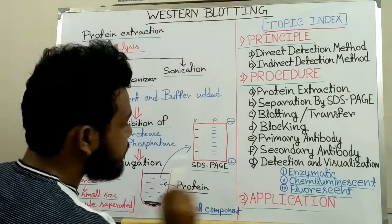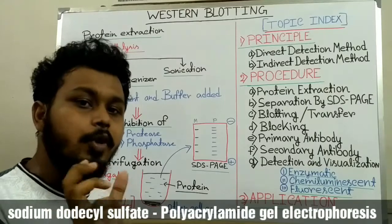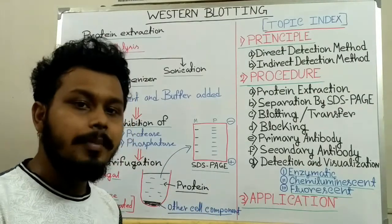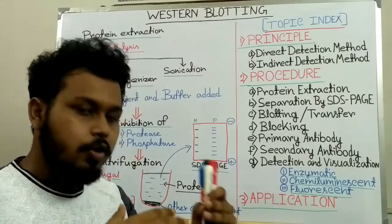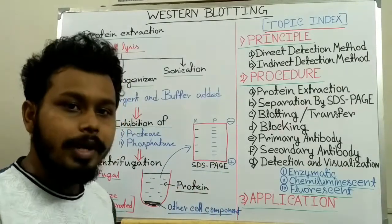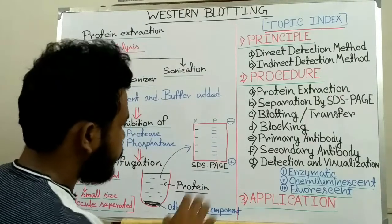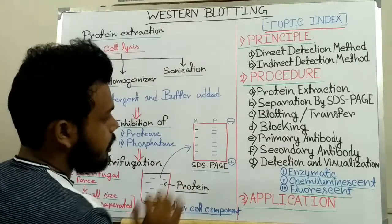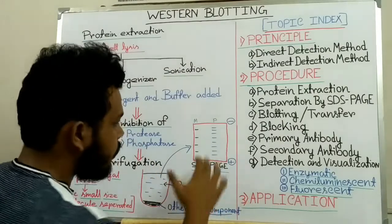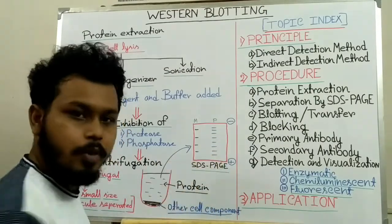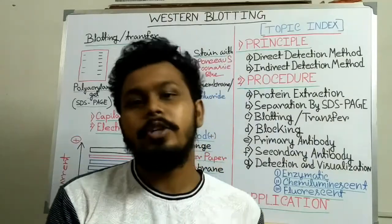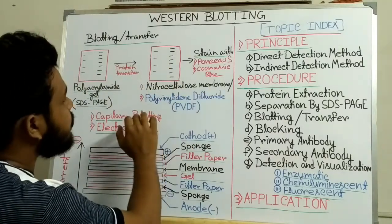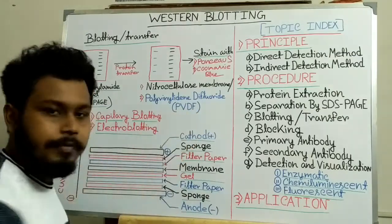We collect this supernatant and separate all proteins according to their size using SDS-PAGE. SDS stands for sodium dodecyl sulfate, a detergent that disrupts the secondary and tertiary structure of proteins. PAGE stands for polyacrylamide gel electrophoresis, which separates proteins according to their molecular weight. Higher molecular weight proteins migrate less and remain on the upper portion of the polyacrylamide gel, while lower molecular weight proteins migrate more and are present on the lower portion.